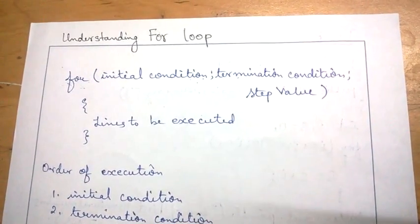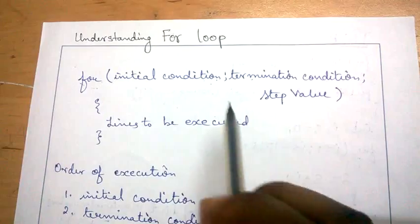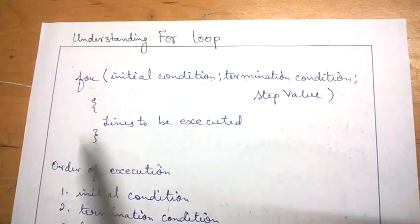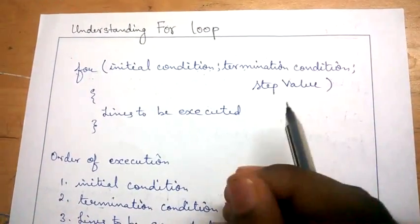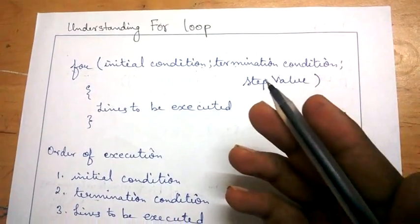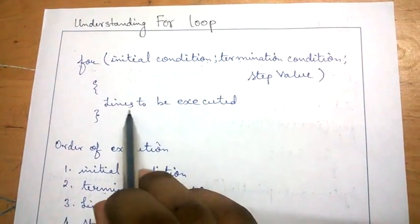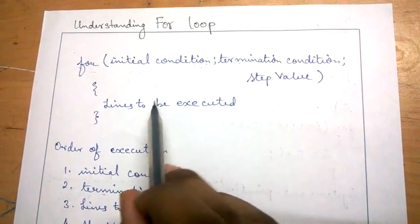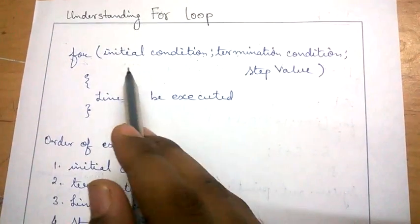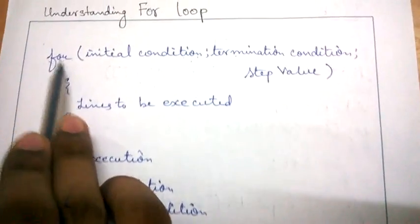Hello guys, today I am going to teach you about the basics of the for loop. First of all, what is a loop? A loop is basically a condition where you have to execute a particular set of lines multiple number of times. Now this is the syntax of a for loop.